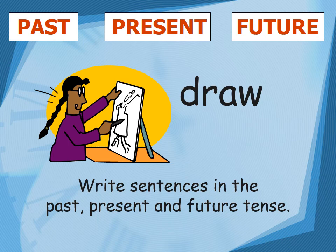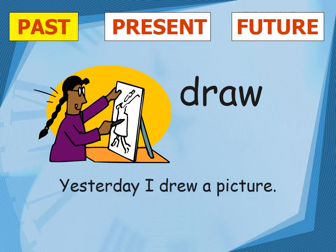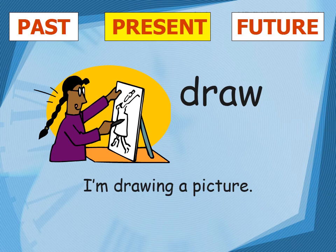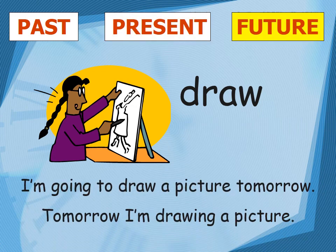Let's take another example: 'draw.' Write a sentence in the past, present, and future tense using the verb 'draw.' For past tense: 'Yesterday I drew a picture' — 'drew' is the past tense of draw. For present tense: 'I am drawing a picture now' or 'At this moment, I am drawing a picture.' For future tense: 'Tomorrow I am drawing a picture' is good enough to demonstrate future tense for the verb 'draw.'